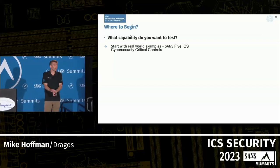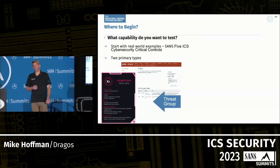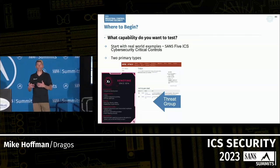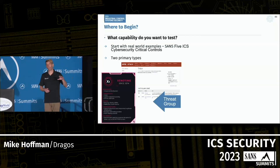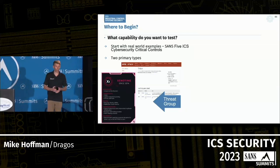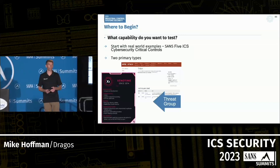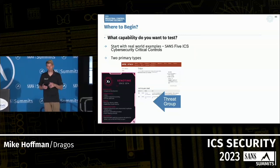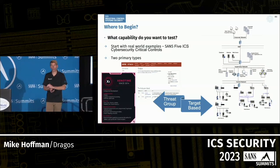Where do you begin with designing? There are a couple of different types. One is using a threat group approach: your IR plan should have been built from a threat and adversarial perspective — who is out there? You overlay the different types of attacks we've seen. If you're in the electrical industry, of course Ukraine-type attacks; if you're in oil and gas, Xenotime and others. You overlay the threat groups, build out your incident response capability from that, and overlay your controls — that's where the SANS five critical controls come from.